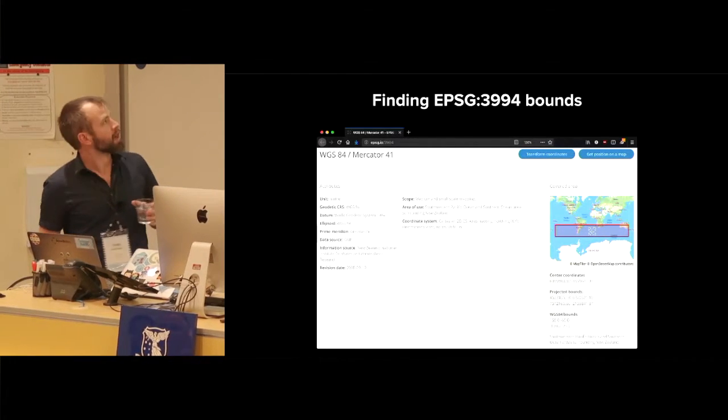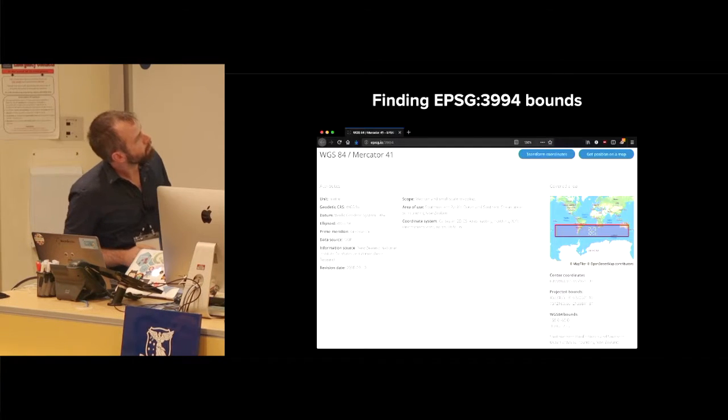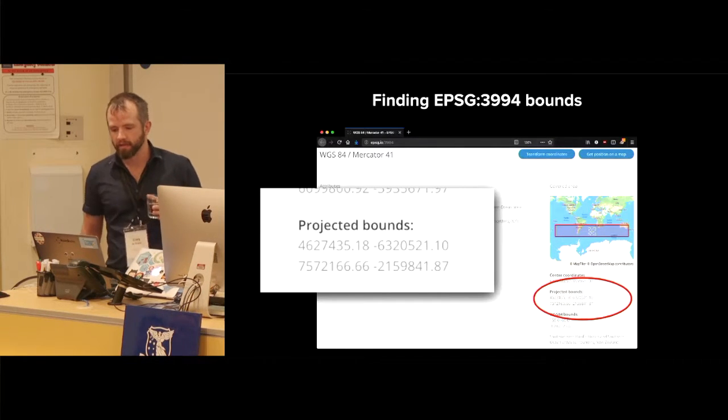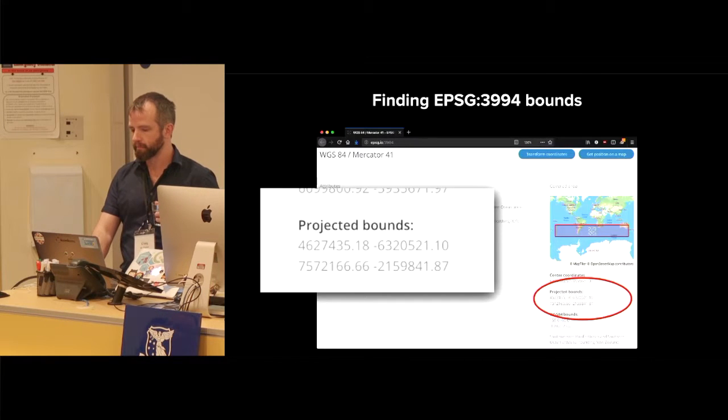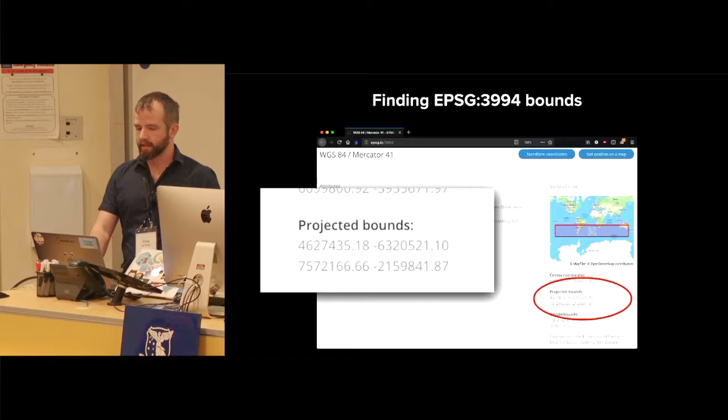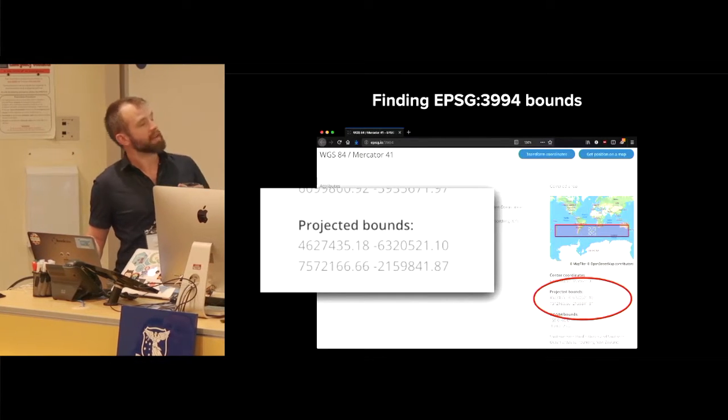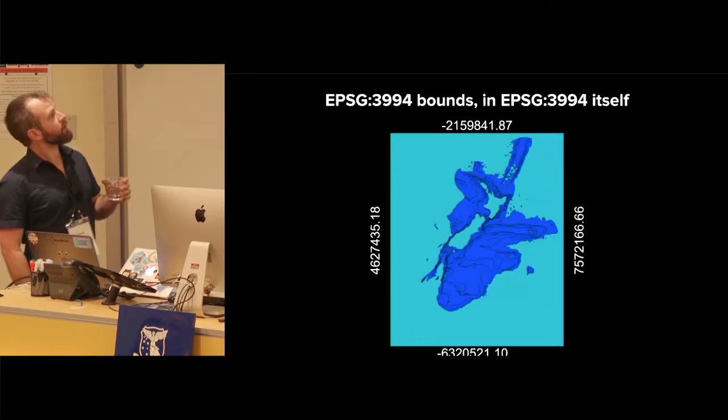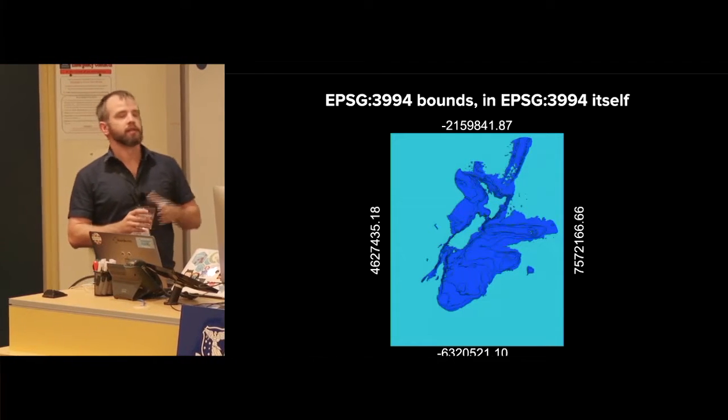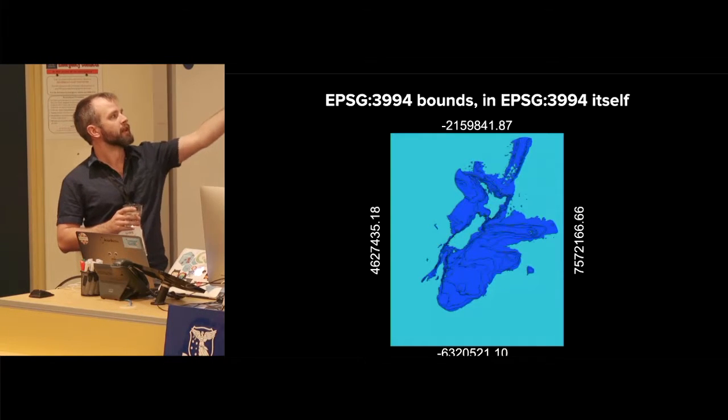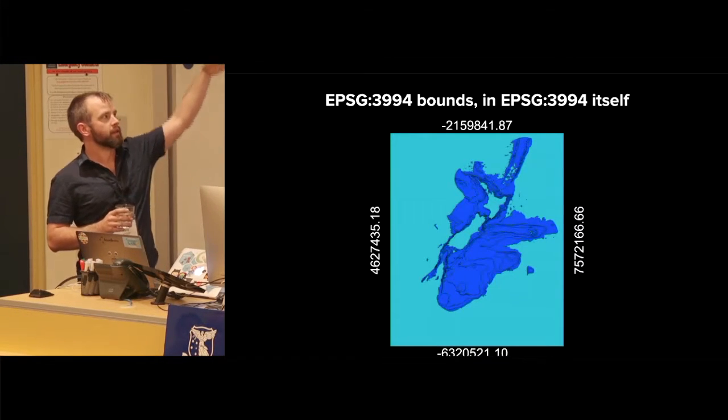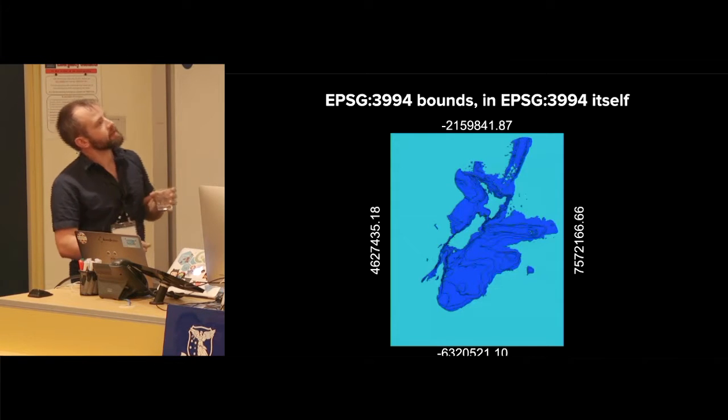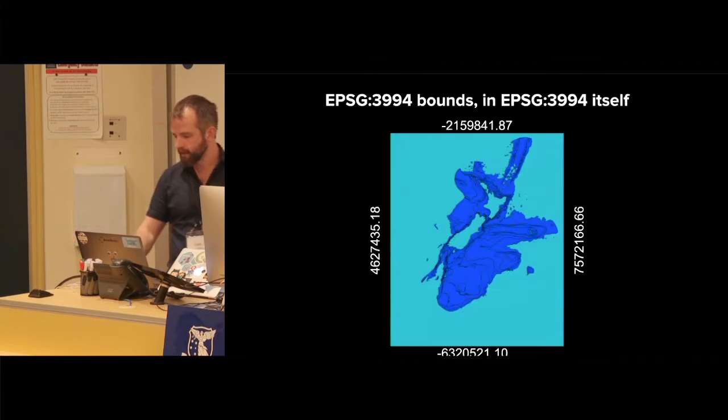EPSG.io is this handy website where you can find out about projections. Well, that can't be right because our data's in New Zealand, isn't it? So let's find out what's going on. What does projected bounds mean? Basically, these numbers are the numbers you might expect to see when you get data in this projection. The X values, as you go to the east, increase from about 4 million to about 7 million. And the Y values, as you go to the north, also increase from minus 6 million to minus 2 million.